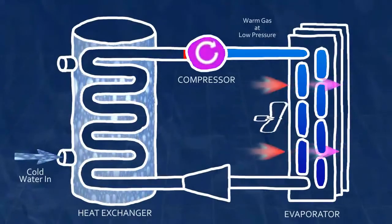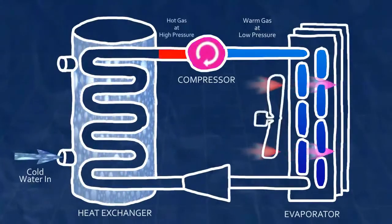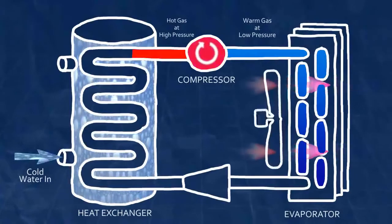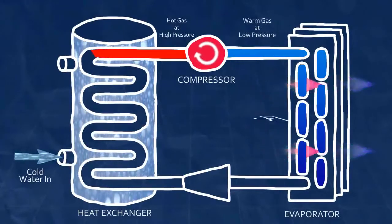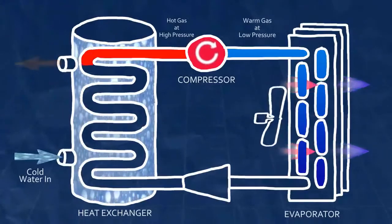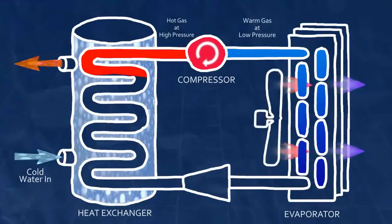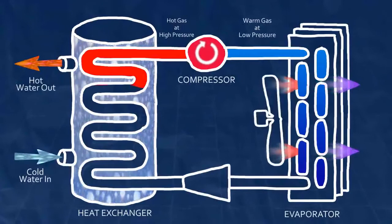The compressor next forces the now high-temperature, high-pressure gas further along the cycle into another heat exchanger called the condenser. The condenser is in contact with the water and the hot gas now gives up its heat to the colder water.